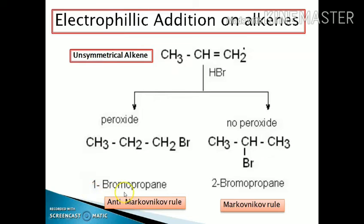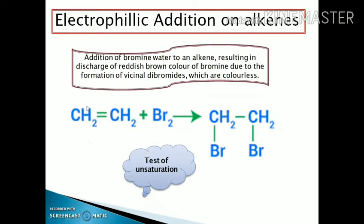This was already discussed in class 11. When dihalogen reacts with an alkene, it gives vicinal dihalides. For example, addition of bromine water to an alkene results in discharge of the reddish-brown color of bromine due to formation of a vicinal dibromide; the product is colorless. This reaction is carried out at lower temperature, as at higher temperature it follows allylic halogenation as discussed previously.